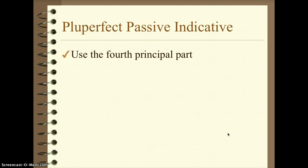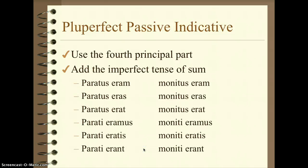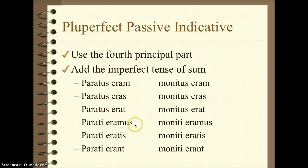Pluperfect passive indicative. We're still going to use the same format, except we're not going to use sum, es, est, sumus, estis, sunt. Starting with the fourth principal part — don't change it until you get to the plural, then you can change it for those last three forms. That fact is actually what messes people up the most. The forms we add as the second word are: eram, eras, erat, eramus, eratis, erant. Notice these are the same endings we attach to the pluperfect active — except in the passive they're whole separate words.